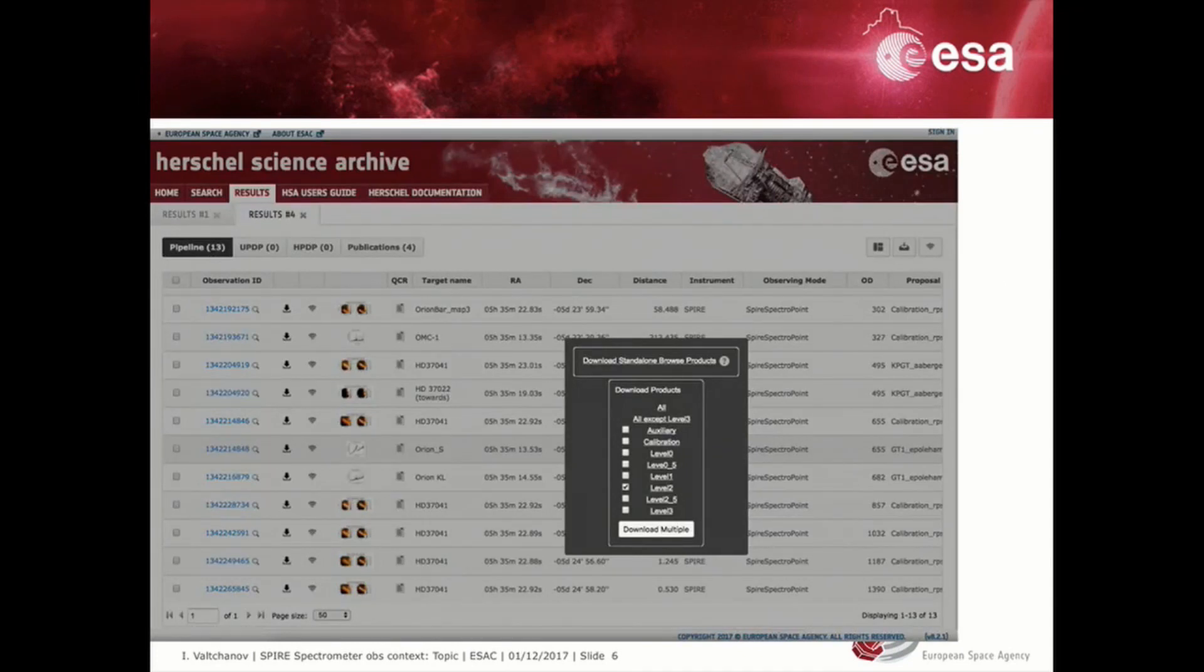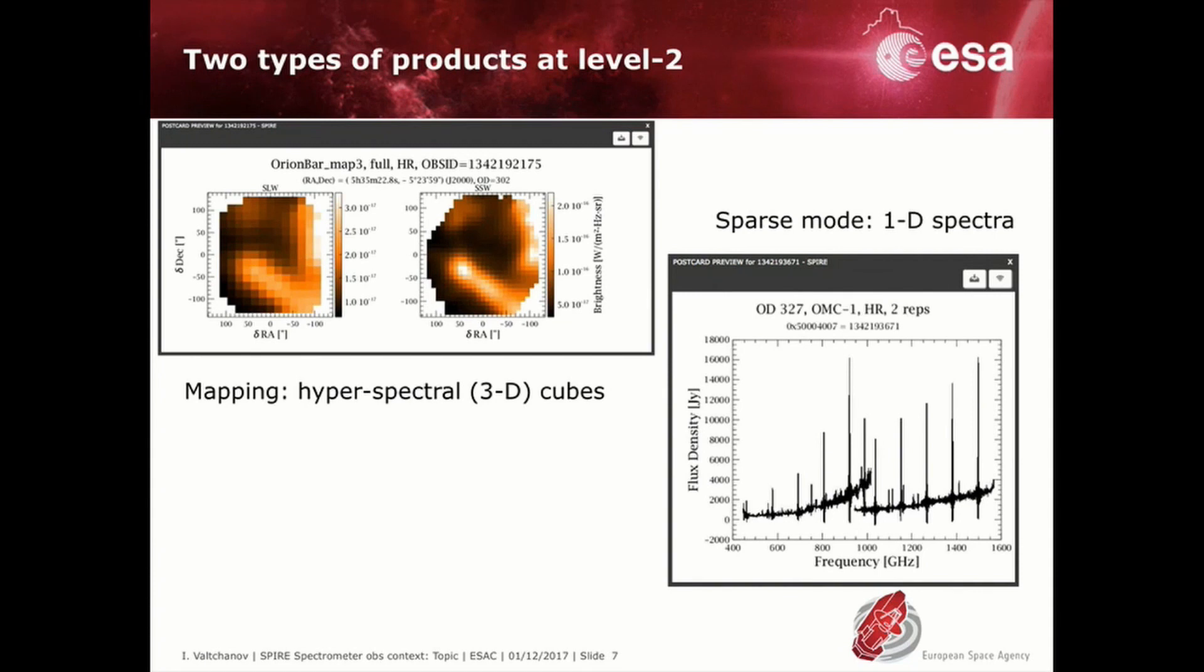Now let's have a look within an observational context. For illustration purposes we have downloaded a full observational context from the Herschel Science Archive. Usually it would suffice to download only the relevant level 2 products. The content of level 2 depends on the observing mode, sparse or mapping.